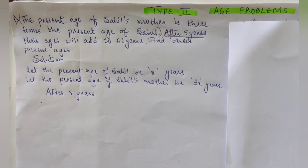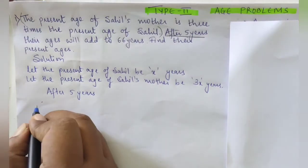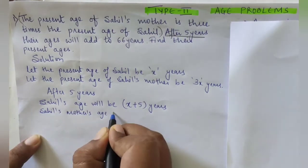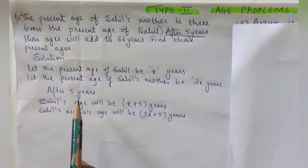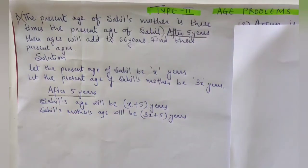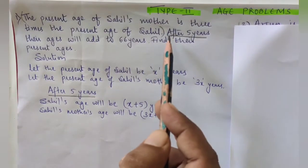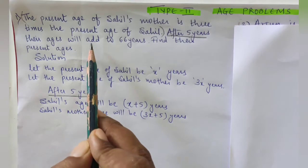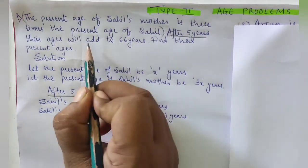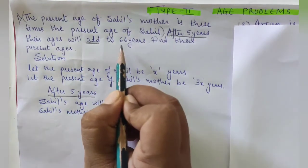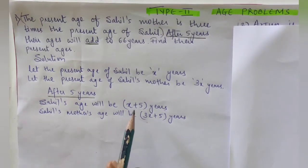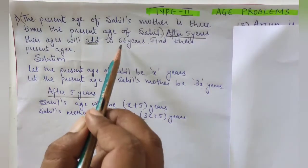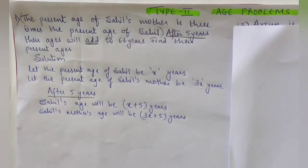Now let us write the statement for after five years. The other condition given is: after five years their ages will add to 66 years, meaning after five years when you add their ages it should equal 66. After five years Sahil's age is x + 5 and his mother's age is 3x + 5, so these two ages added together equal 66.